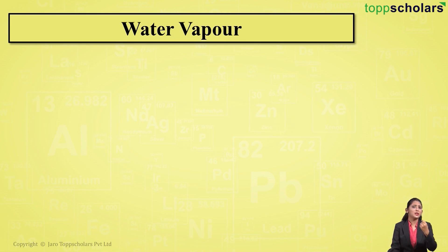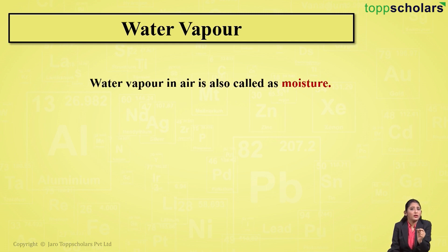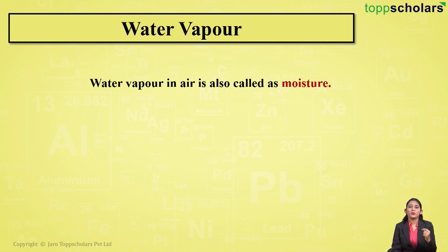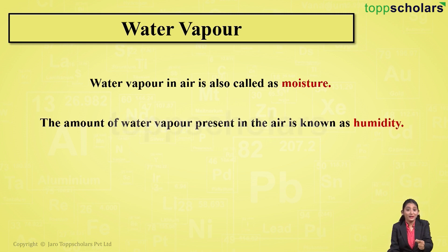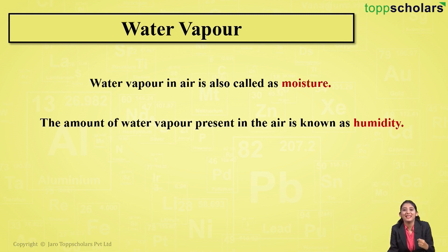Now let's move on to the next important constituent of air — water vapor. Water vapor is nothing but moisture. We also hear people saying that today the climate is too humid. Humidity is the amount of water vapor present in the air, so when we say the climate is humid, we mean the amount of water vapor in the air is high.